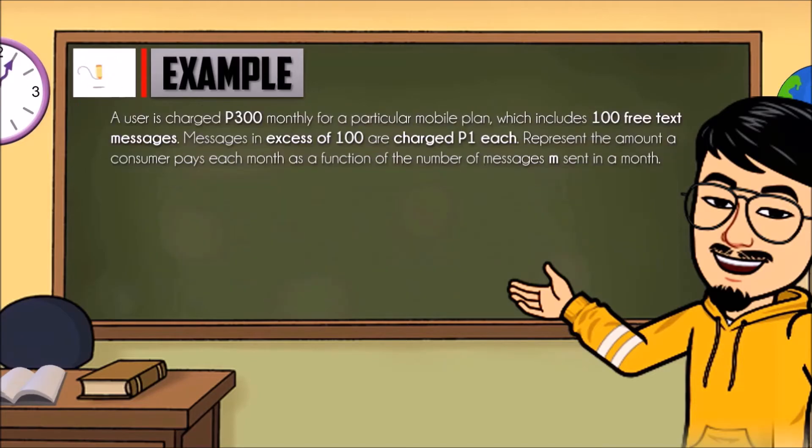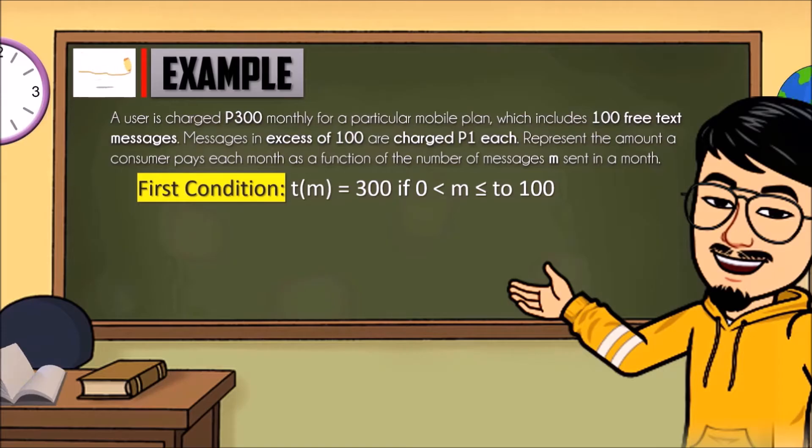Represent the text message as T in terms of M. There are two conditions in this problem. First condition: P300 per month if 100 or less than 100 text messages are consumed per month.